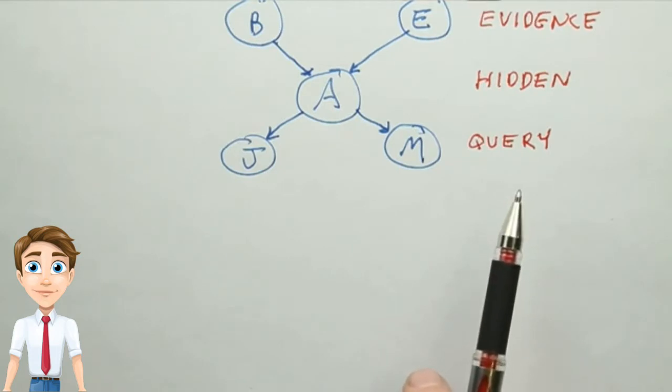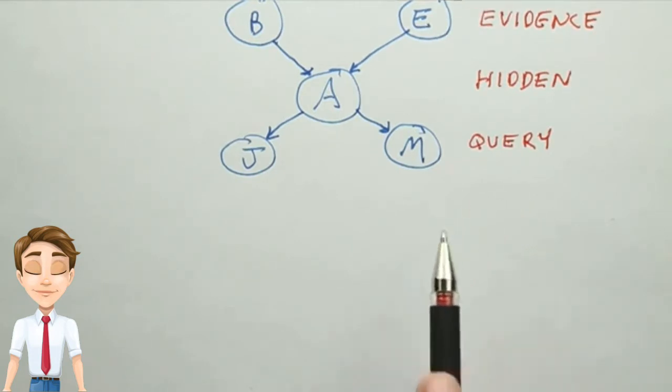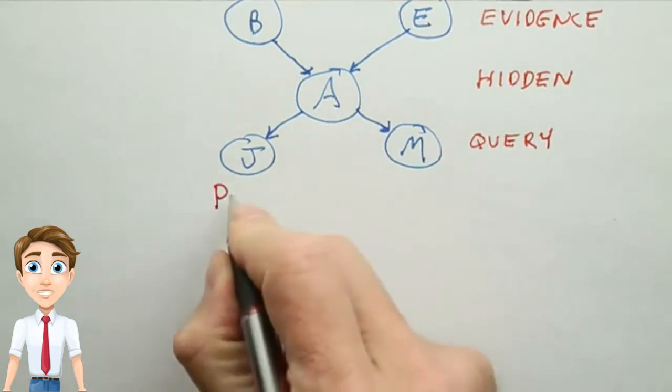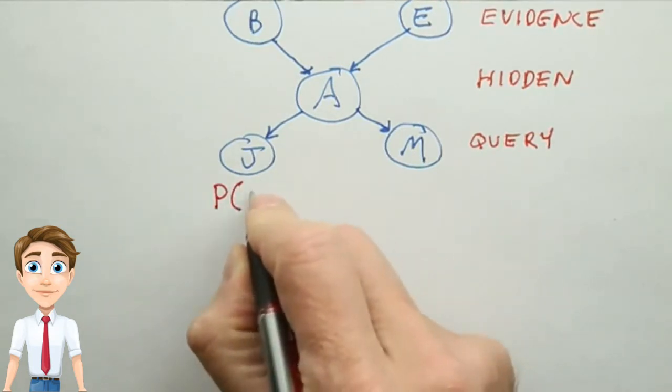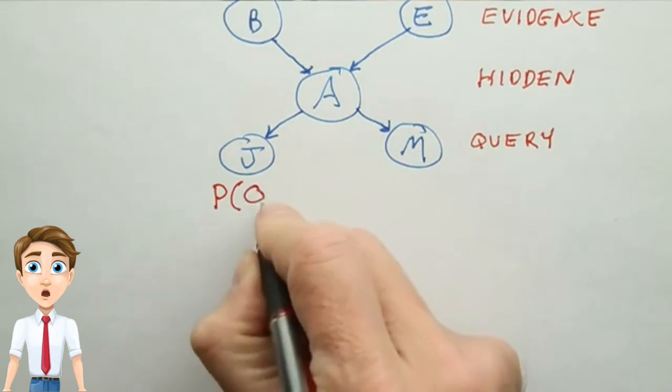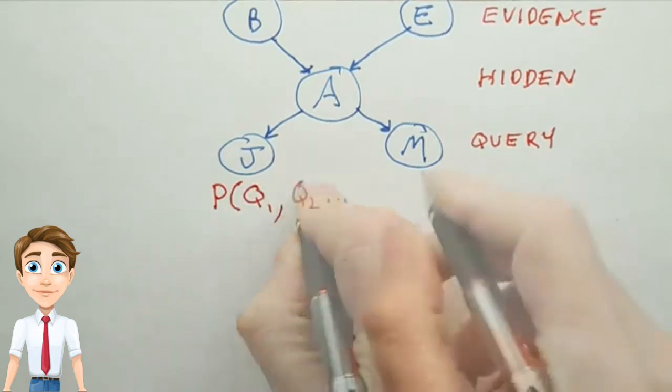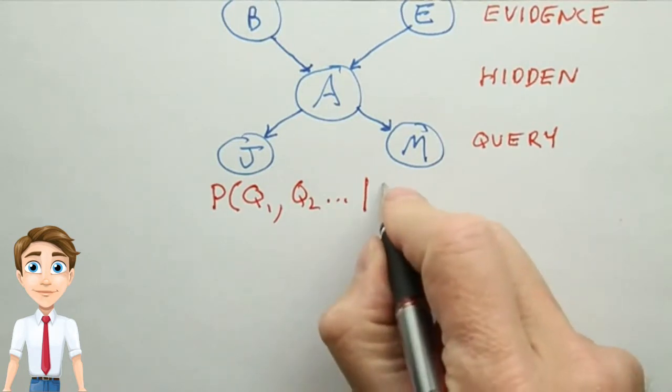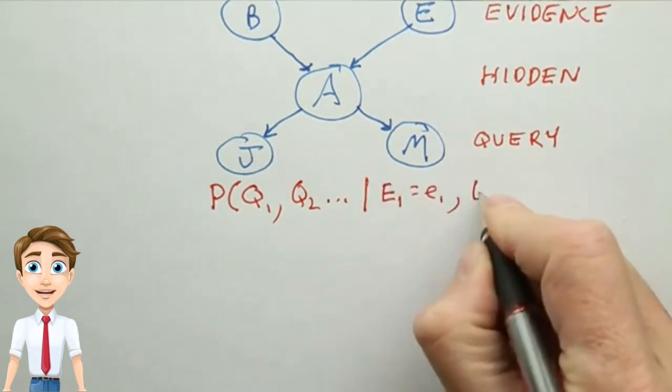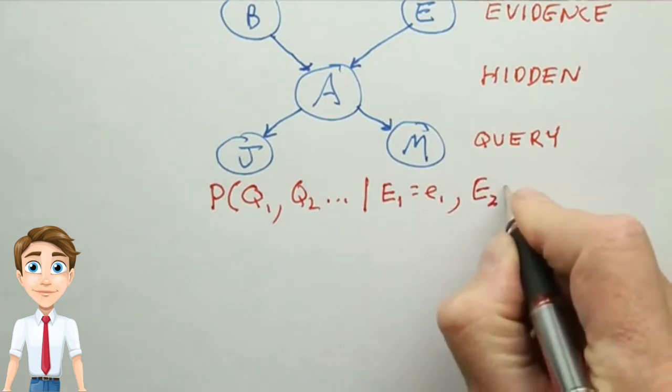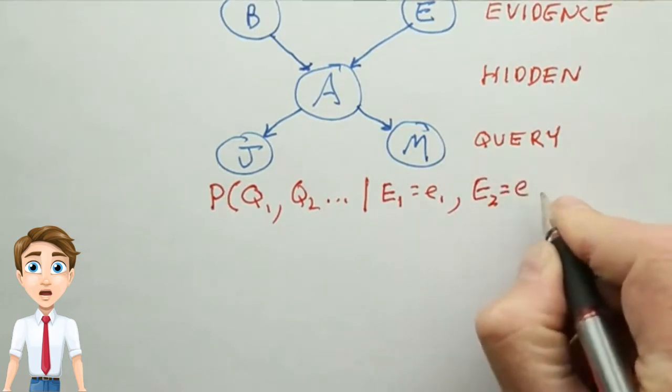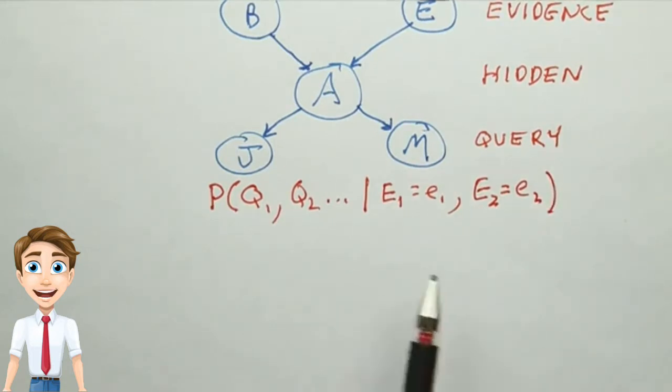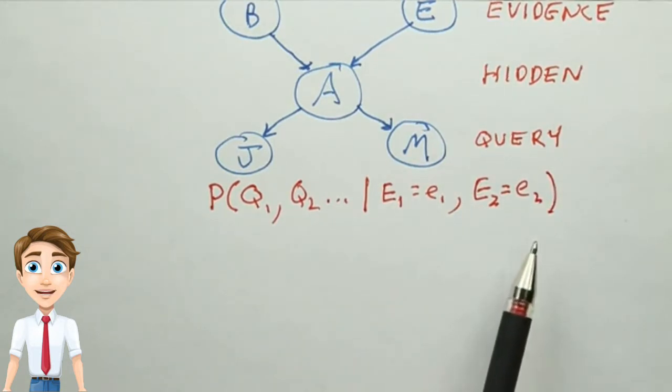We call this the posterior distribution given the evidence. And we can write it like this: it's the probability distribution of one or more query variables given the values of the evidence variables. And there can be zero or more evidence variables, and each of them are given an exact value. And that's the computation you want to come up with.